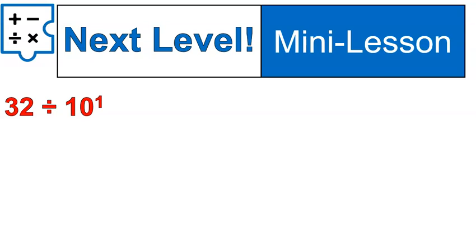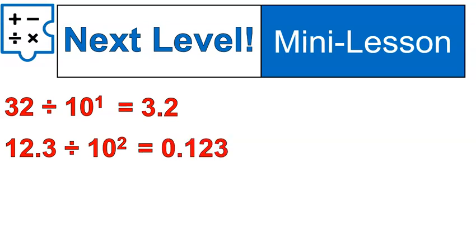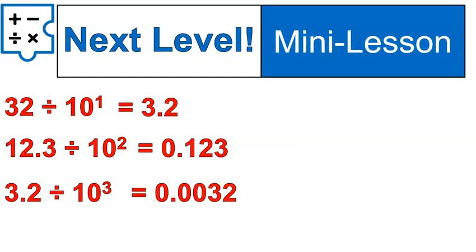So 32 divided by 10¹, we're shifting the decimal one place, 3.2. 12.3 divided by 10², we're shifting the decimal two places to the left. It would look like this. 3.2 divided by 10³, this one's a little bit more complex. Think about that one for just a second. What would you do with that one? Make sure you're filling in those zeros and it should look like this.